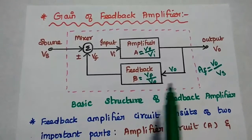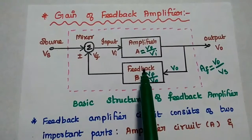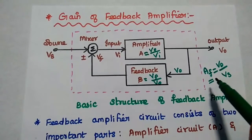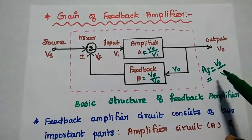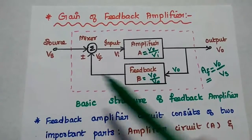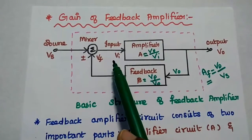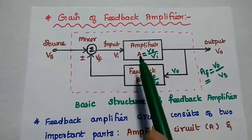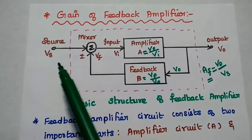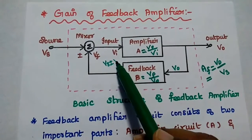Now, what about the overall gain of this system? The gain of the amplifier with feedback, AF, is equal to the output V0 divided by the source input Vs. The actual input to the amplifier, Vi, can be obtained by adding or subtracting the feedback signal from Vs. So we represent Vi as equal to Vs plus or minus Vf.